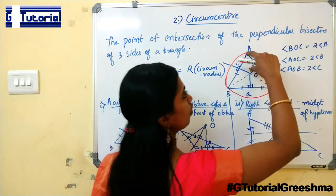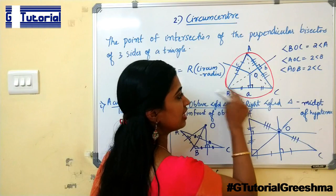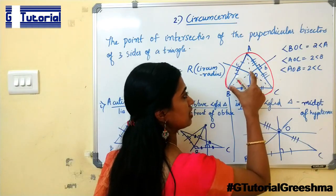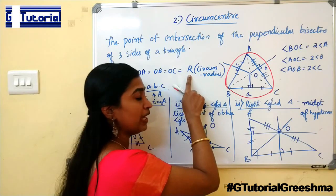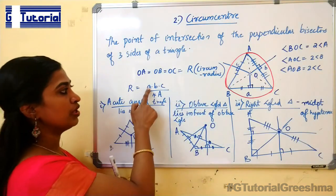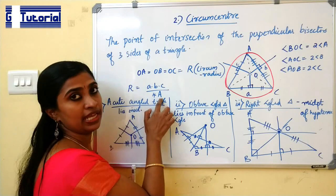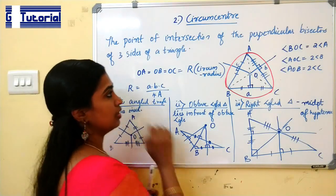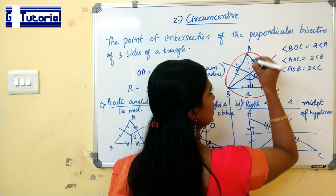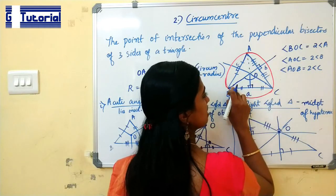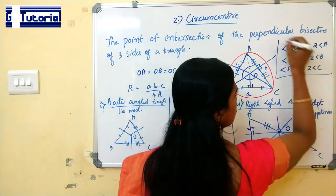The circumcenter is equidistant from the three vertices A, B, and C of the triangle. That is, OA equals OB equals OC. This common distance is called the circumradius, denoted by R. The circumradius is given by R = (a × b × c) / (4 × area), where a, b, c are the lengths of the three sides. Also note the angle relationships: angle BOC equals 2 times angle A, angle AOC equals 2 times angle B, and angle AOB equals 2 times angle C.